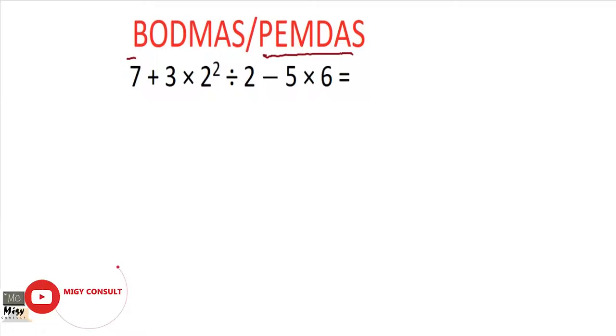Then Exponents, then Multiplication, Division, Addition, and Subtraction. This is what we are going to do. The P means that any bracket we see, we solve first. The E stands for exponent; any exponent we see, we'll solve.